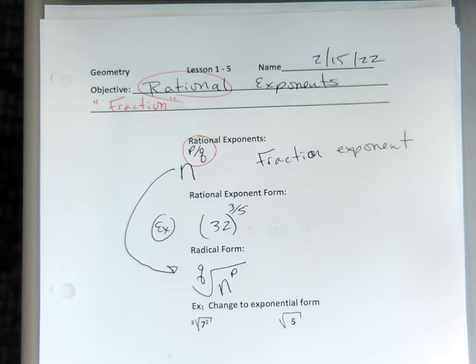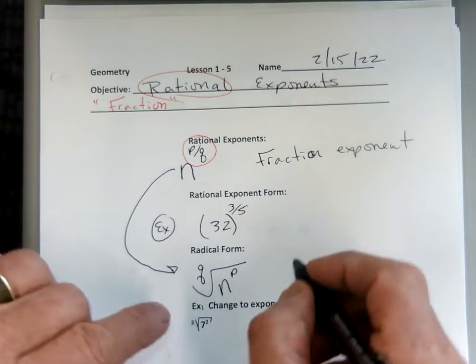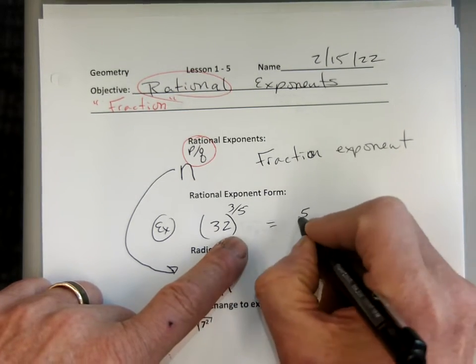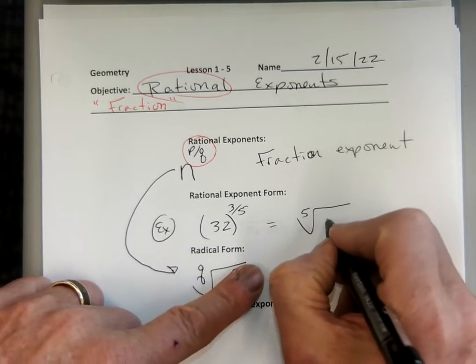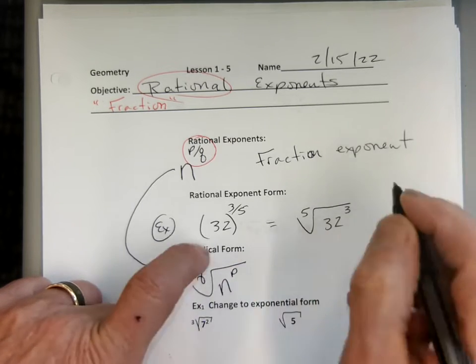So take 32: I'm going to make the 5 the root, and make the 3 the power. I'll rewrite this as the 5th root of 32 to the 3rd power.